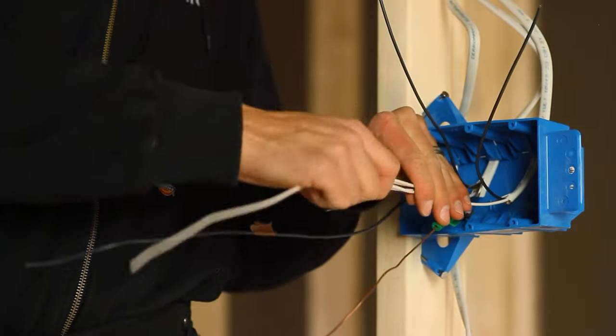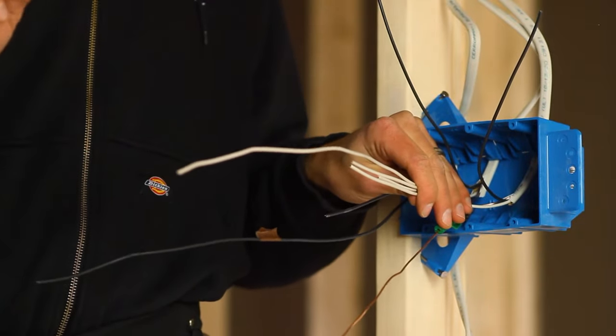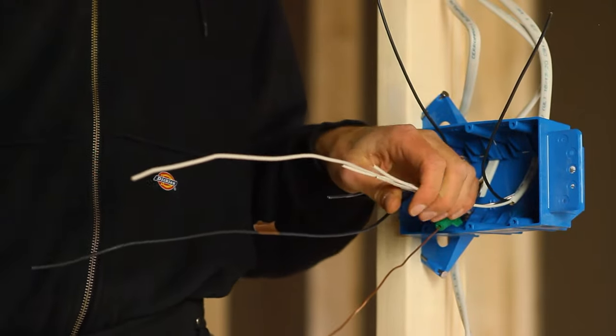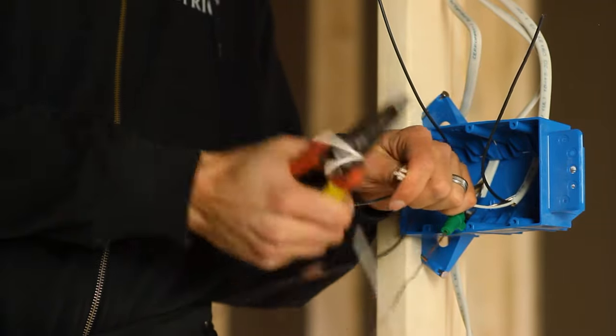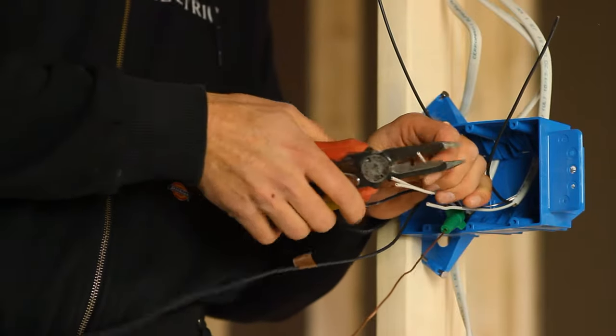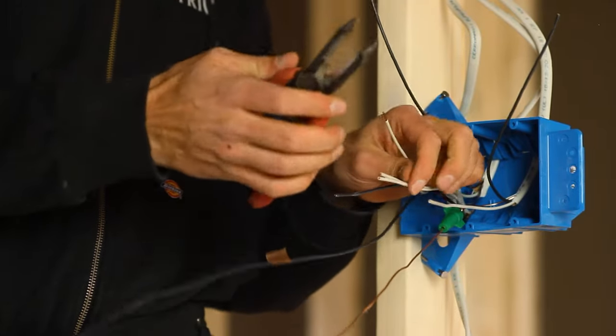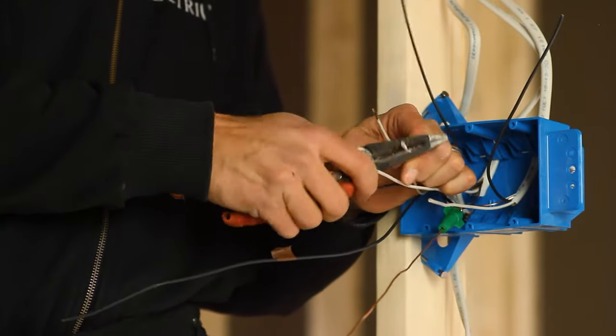If a white conductor is used for any other purpose, it must be marked as such. In this case, these are all neutral conductors. I've brought them to a central location. I'm cutting them to the same length. I'm stripping off three quarters of an inch from the end of the conductor.